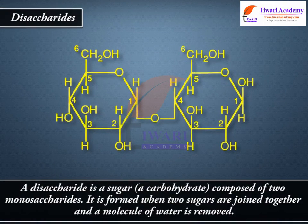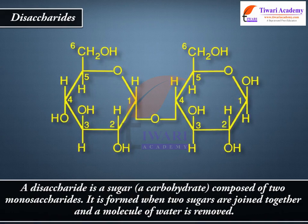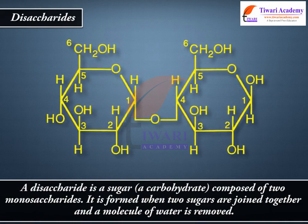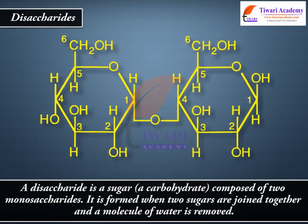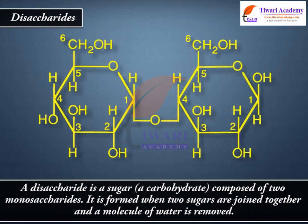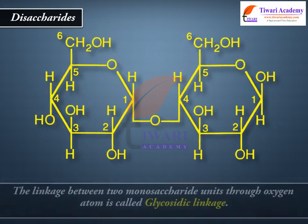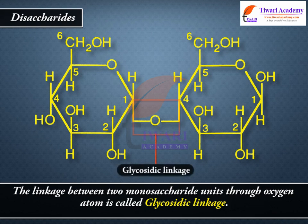A disaccharide is a sugar, a carbohydrate, composed of two monosaccharides. It is formed when two sugars are joined together and a molecule of water is removed. The linkage between two monosaccharide units through an oxygen atom is called glycosidic linkage.